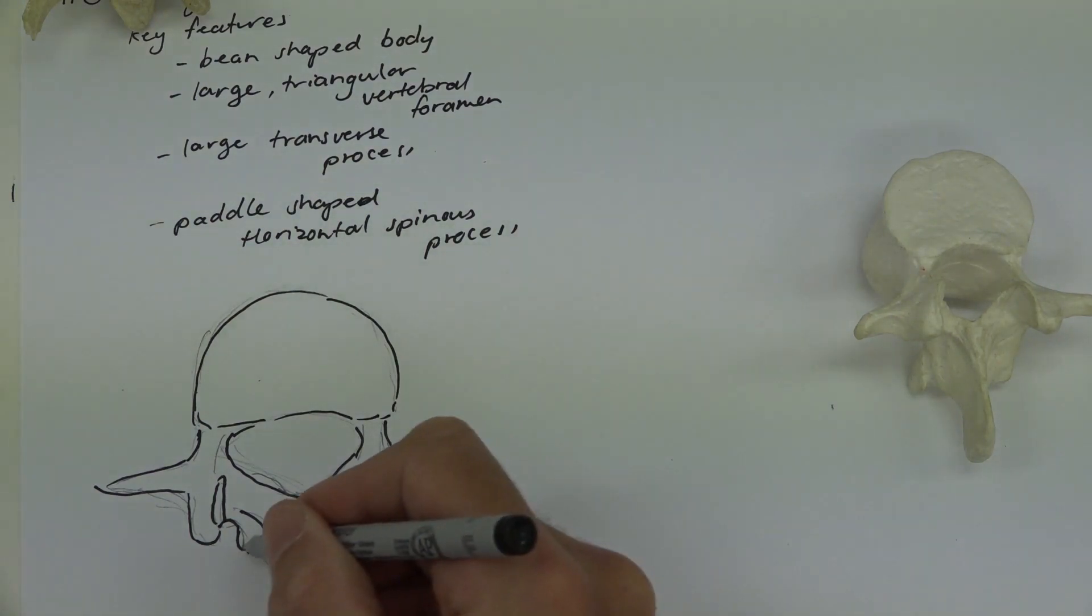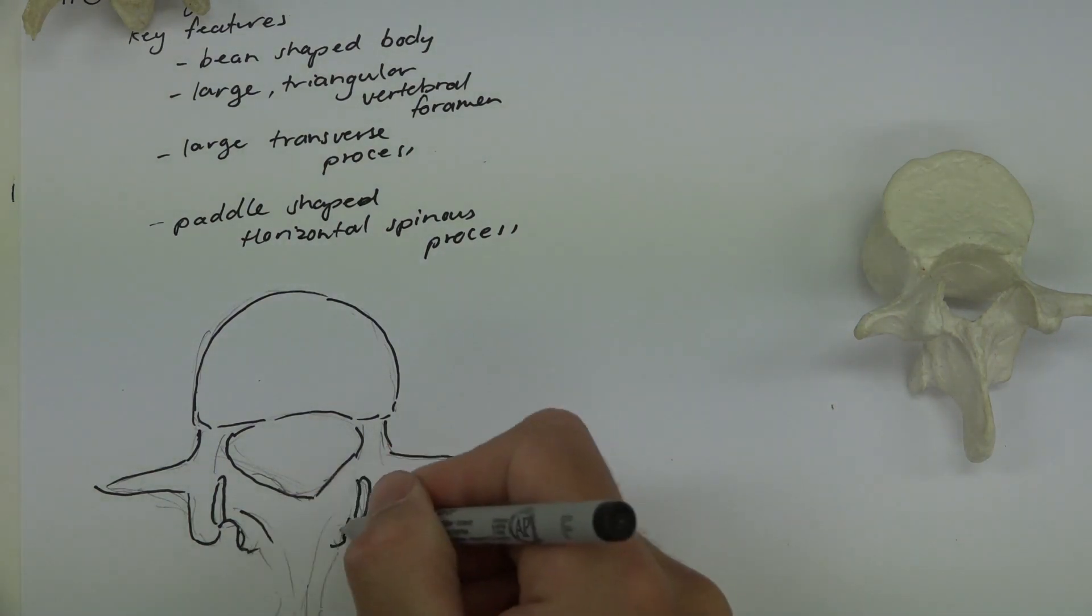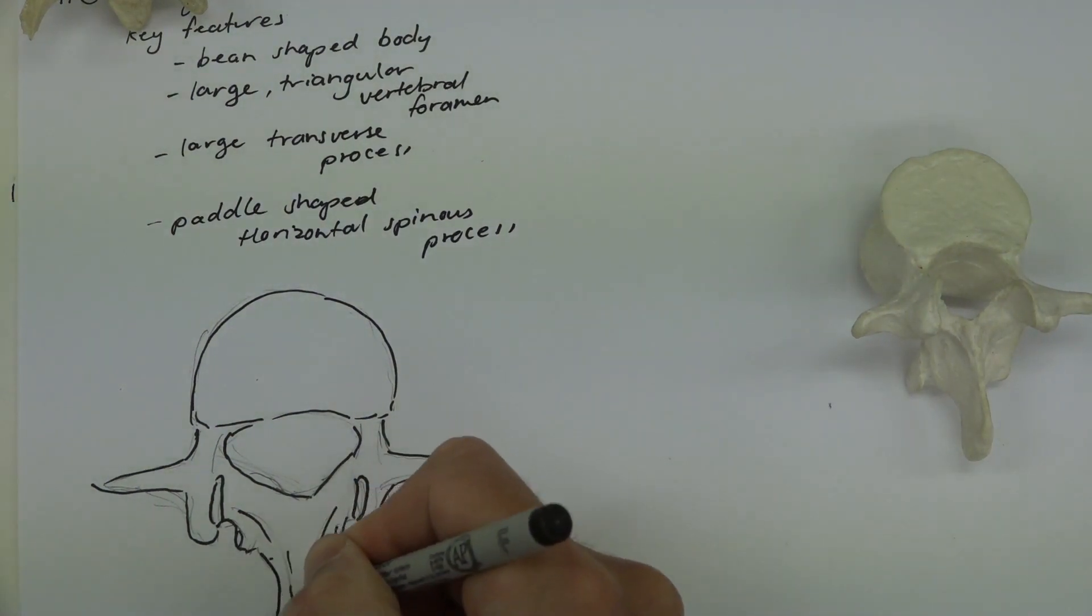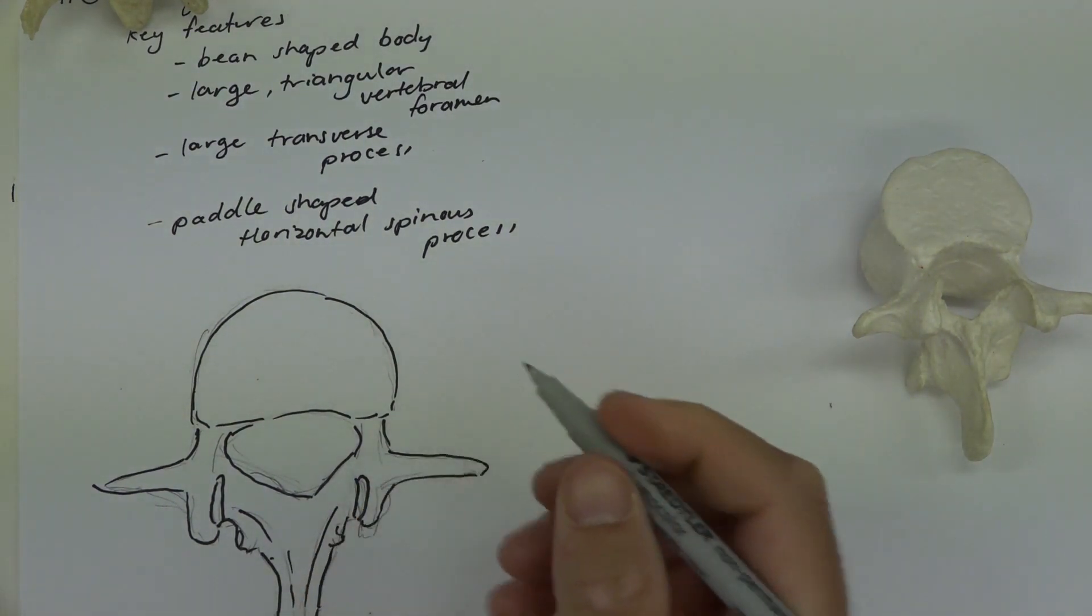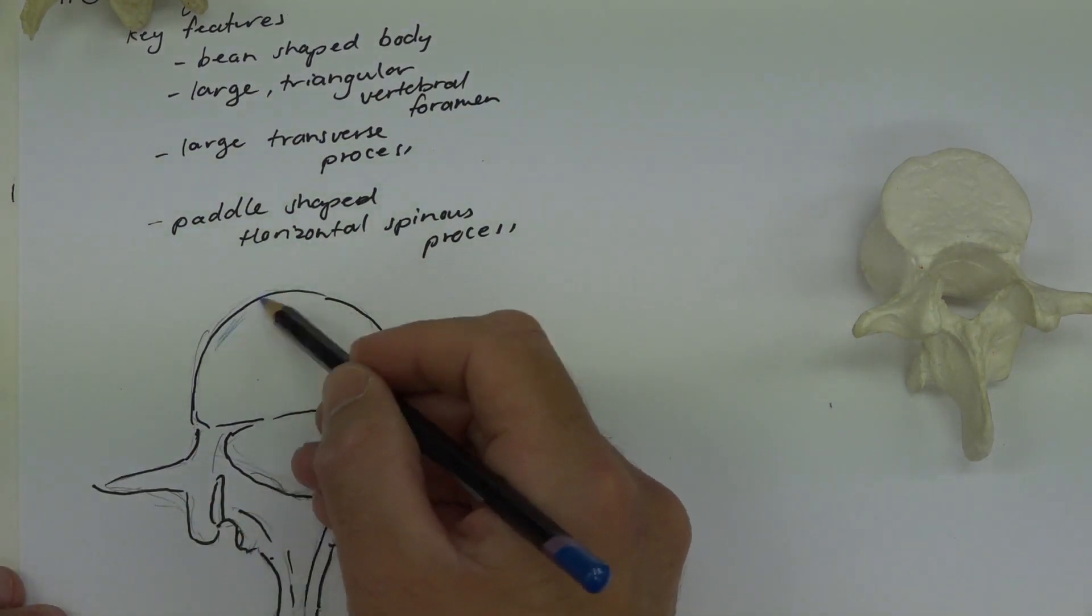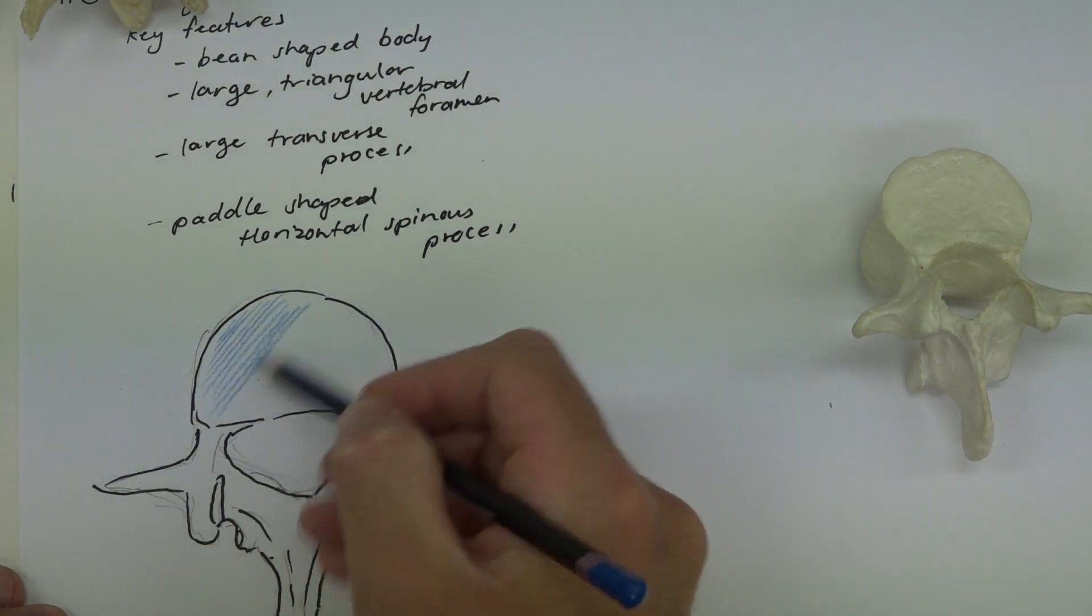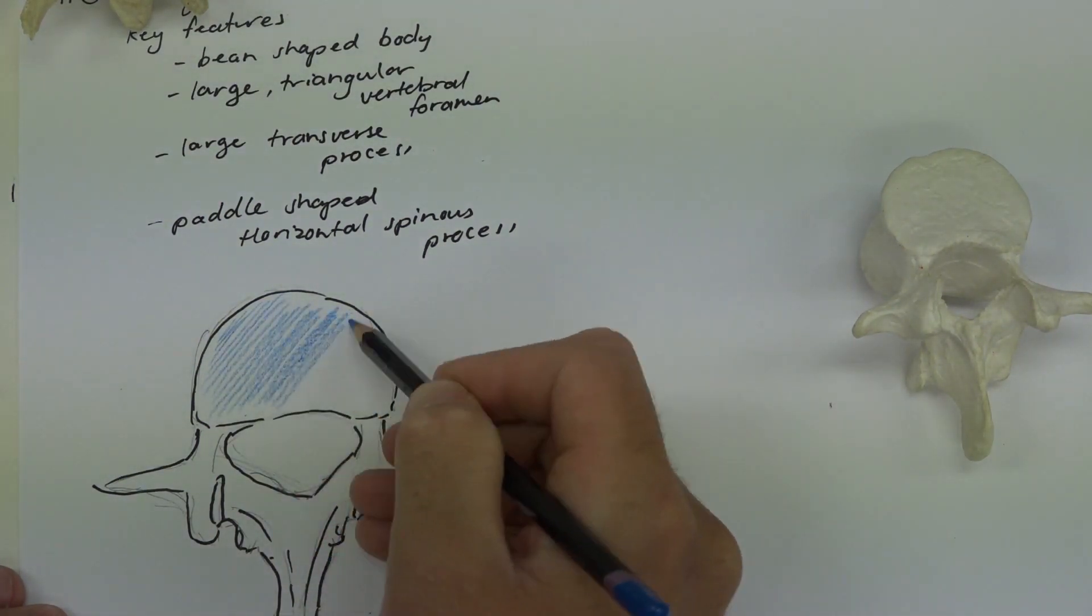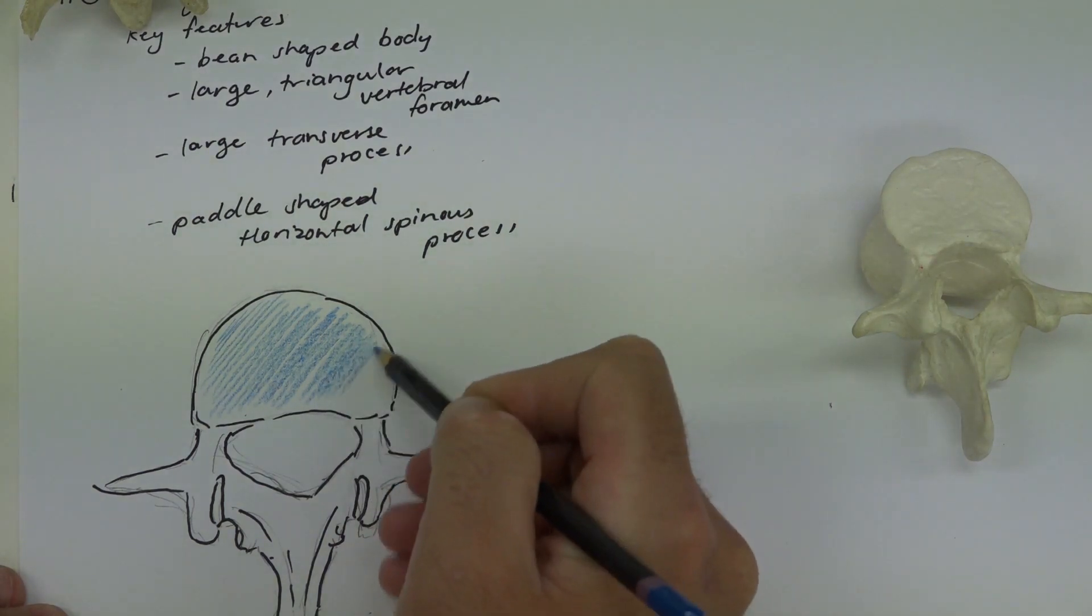Then the inferior articular facets would be down below here, and the spinous process would obviously direct more towards the back. And like we said, it's more paddle-shaped. So coloring in like the rest of the structures that we've done, this large region here on the body would be for that secondary or fibrocartilaginous joint.